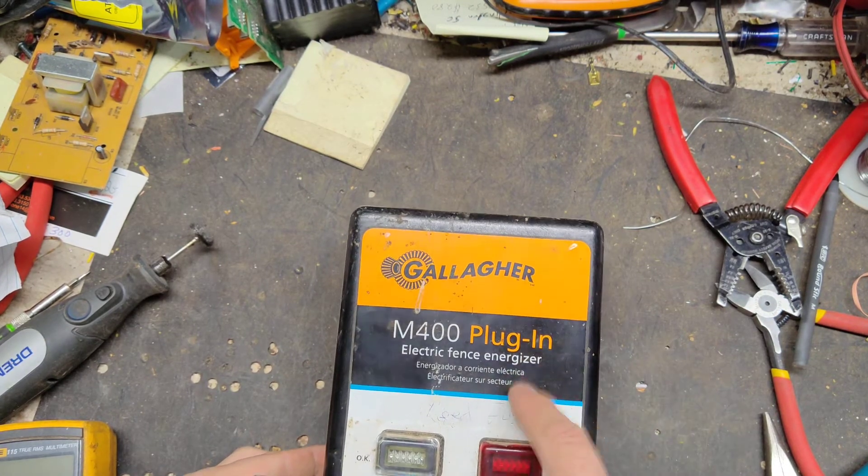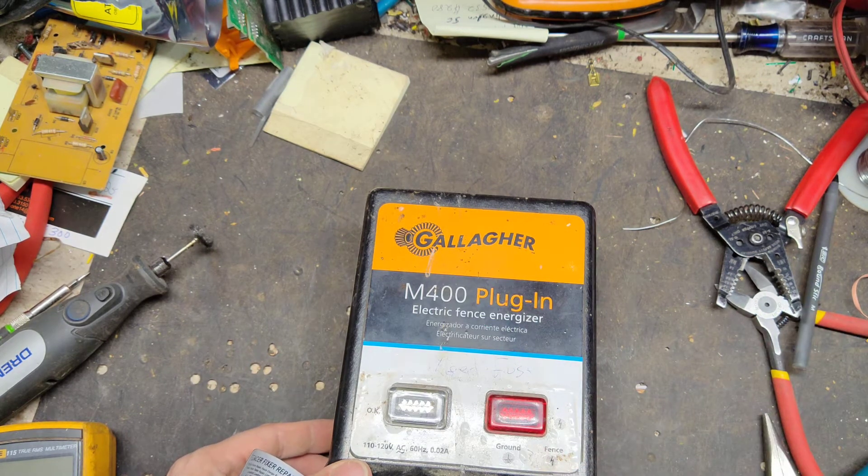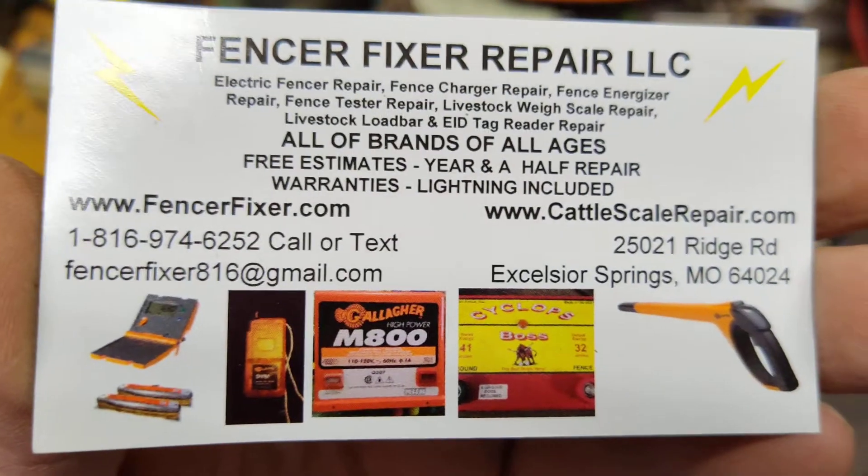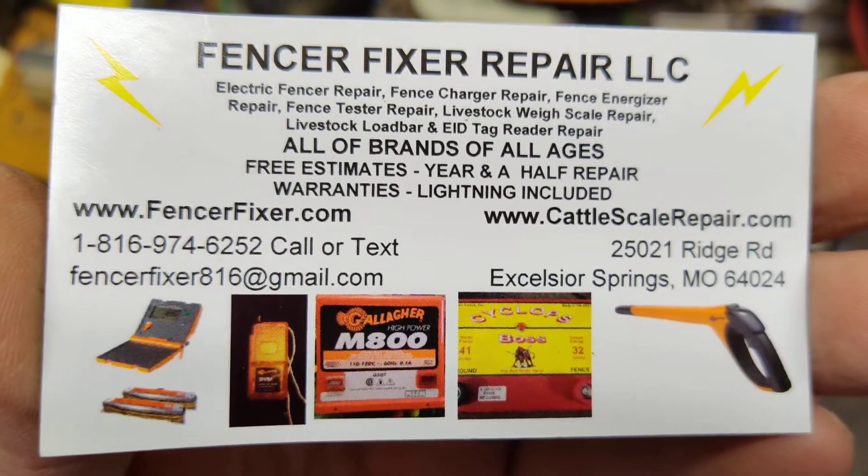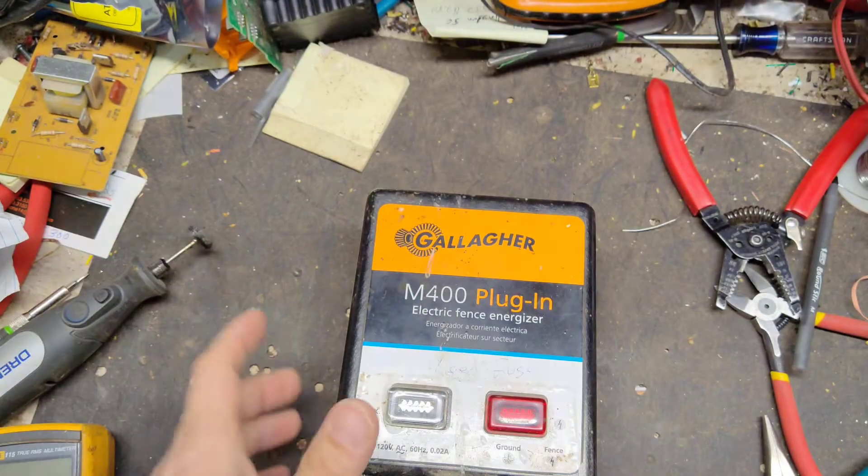I think this was a 3.7 joule stored and M360 3.6 joule stored, so it's basically the same thing power-wise, but none of the parts are interchangeable between these things. They're all completely different. This is old-school, it's about two generations ago.